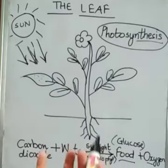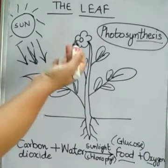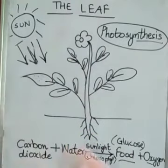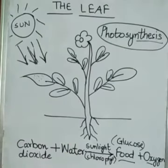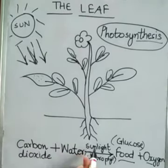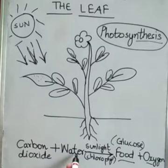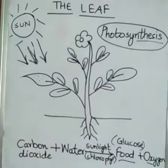In some plants, food is stored in leaves — for example, spinach, coriander, etc. And in some plants, food is stored in the stem — for example, sugarcane, potato, etc. Photosynthesis can now be defined as the process by which green leaves prepare their food using sun's energy with the help of carbon dioxide and water.